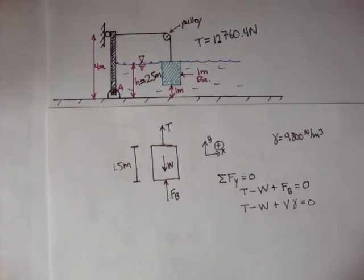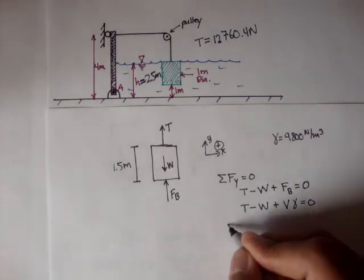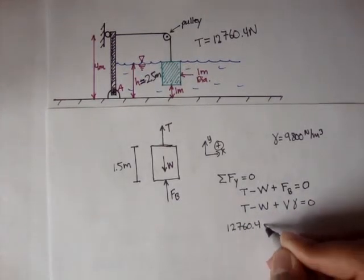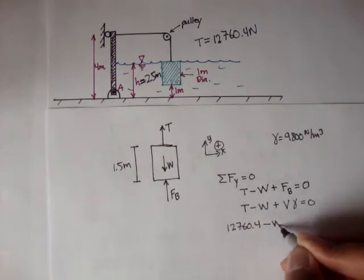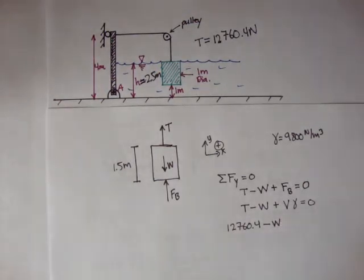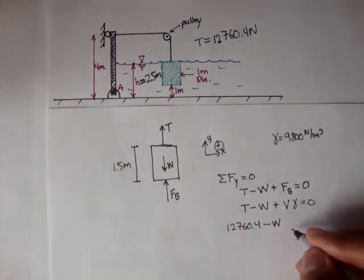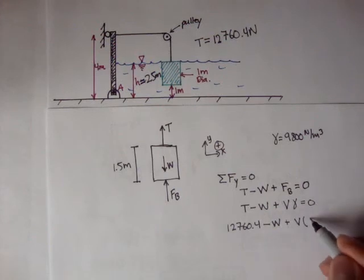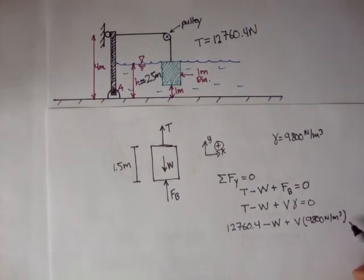So the tension we said was 12,760.4 newtons minus the weight, we don't know the weight yet, plus the volume of that block times gamma, which is 9,800 newton per meter cubed, is equal to 0.